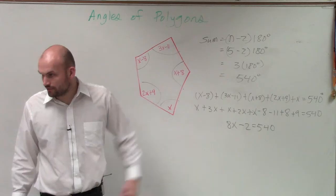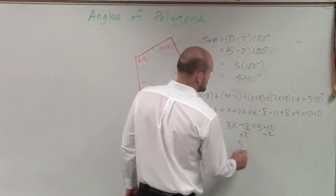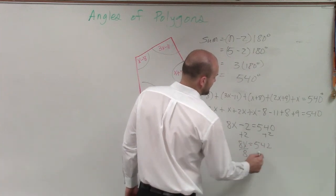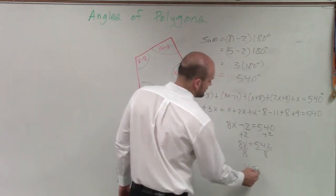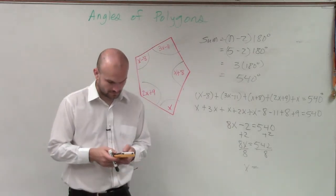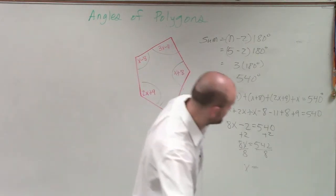Now to solve for x, I add 2. So I have 8x equals 542. Divide by 8, divide by 8. x equals 542 divided by 8, which is 68.1.